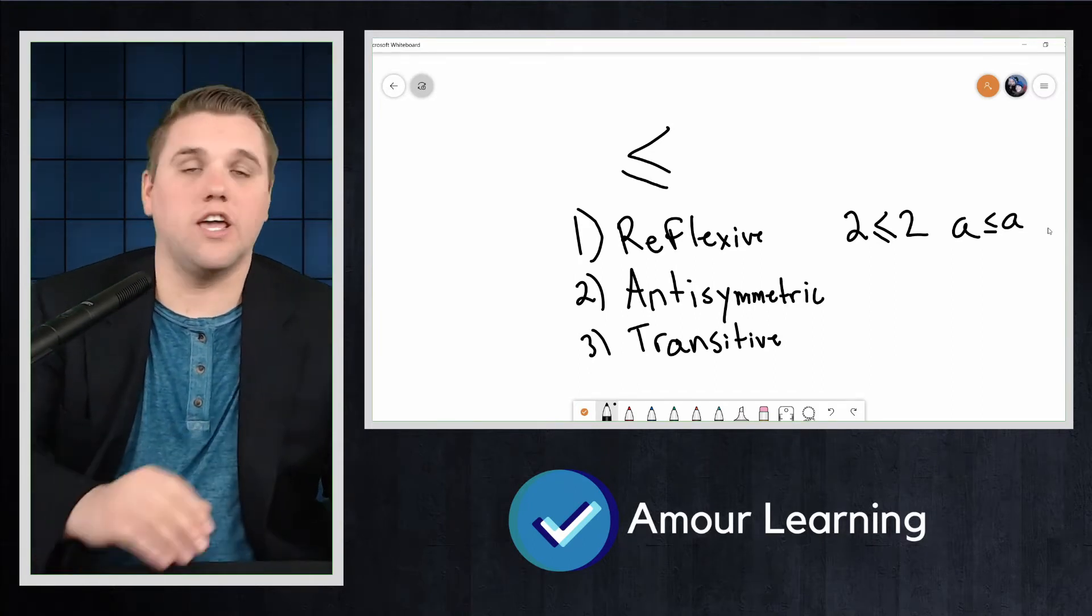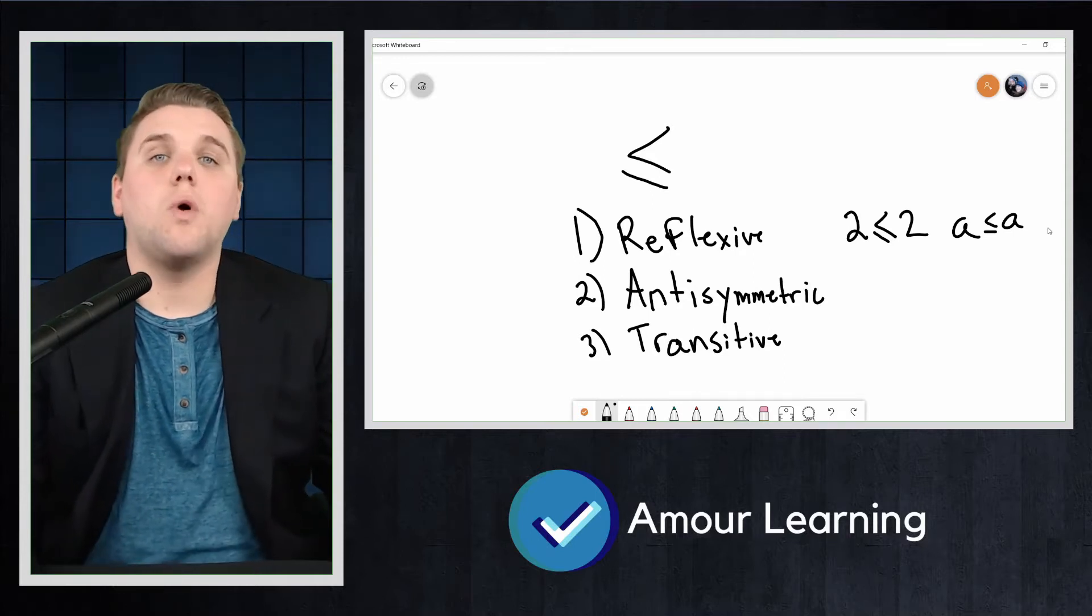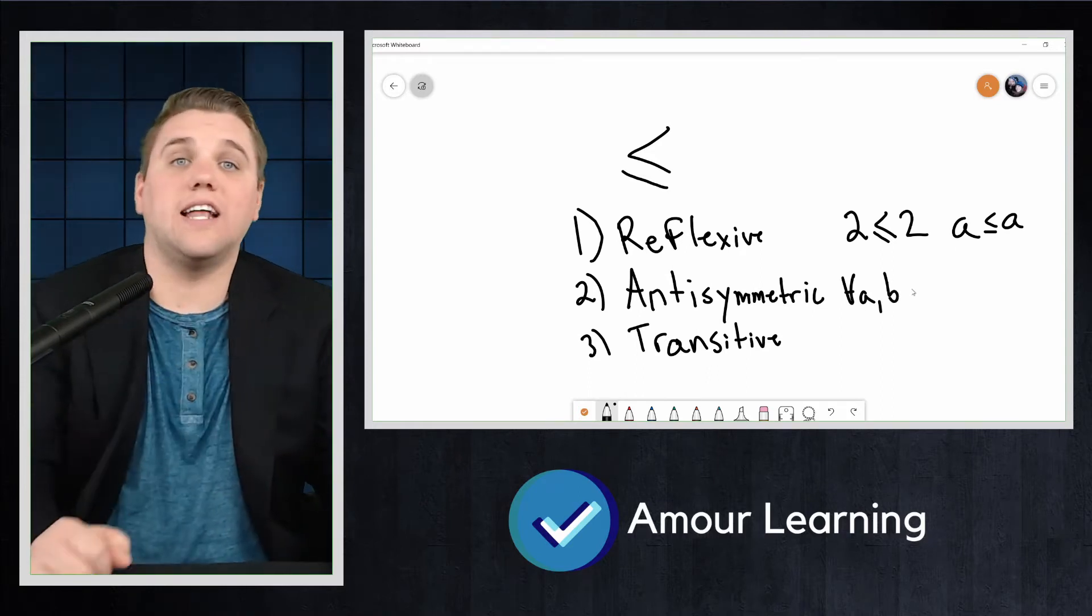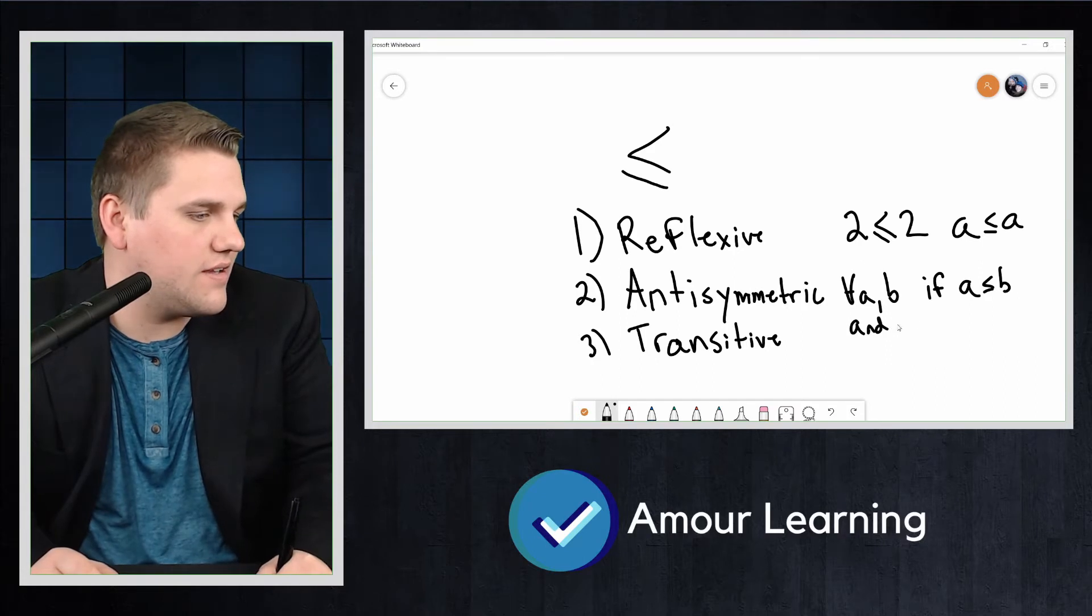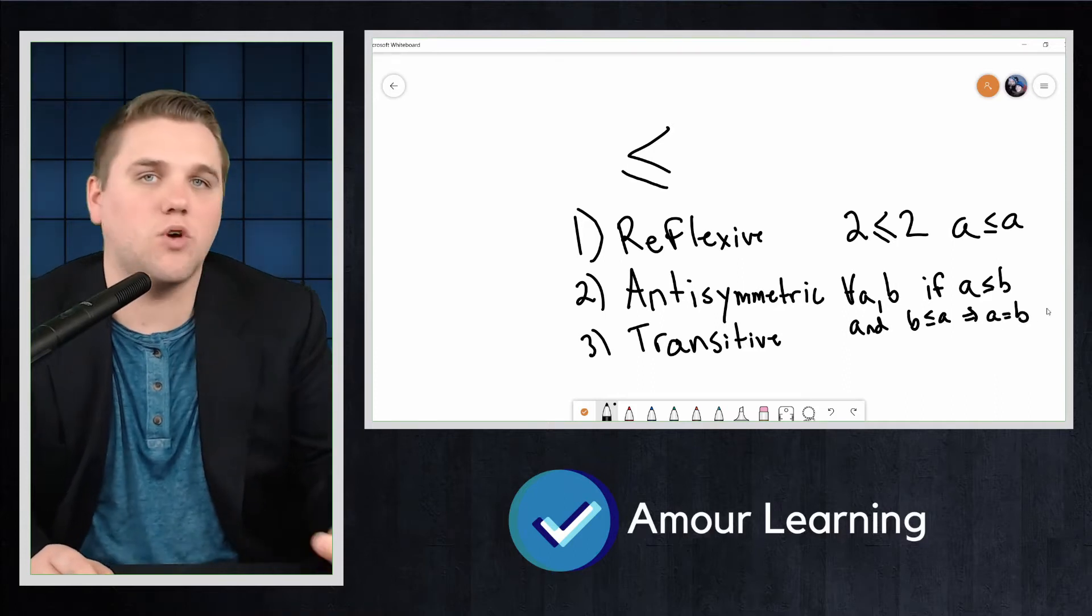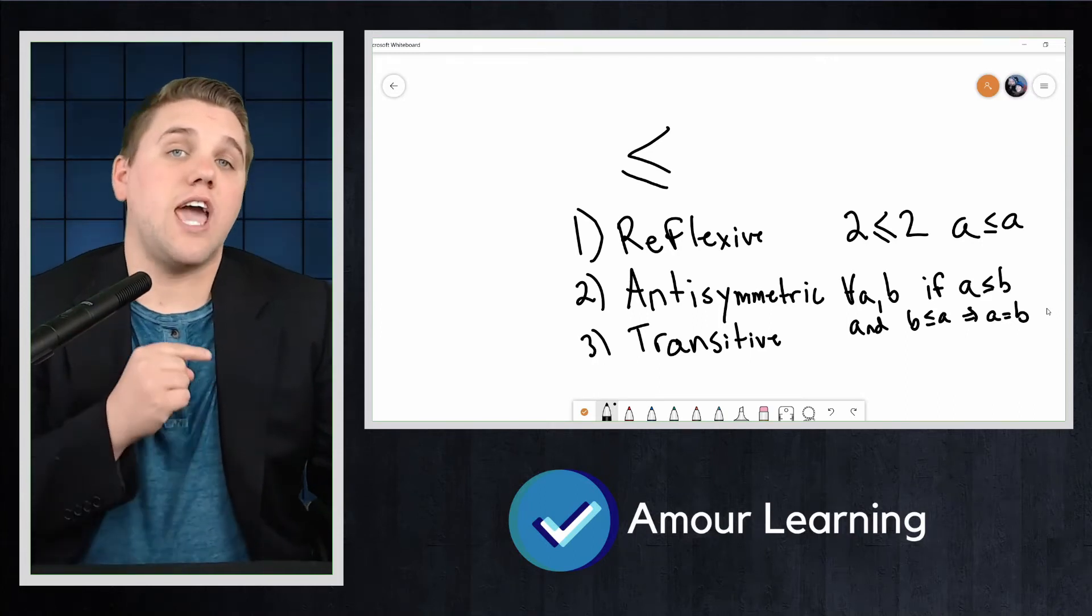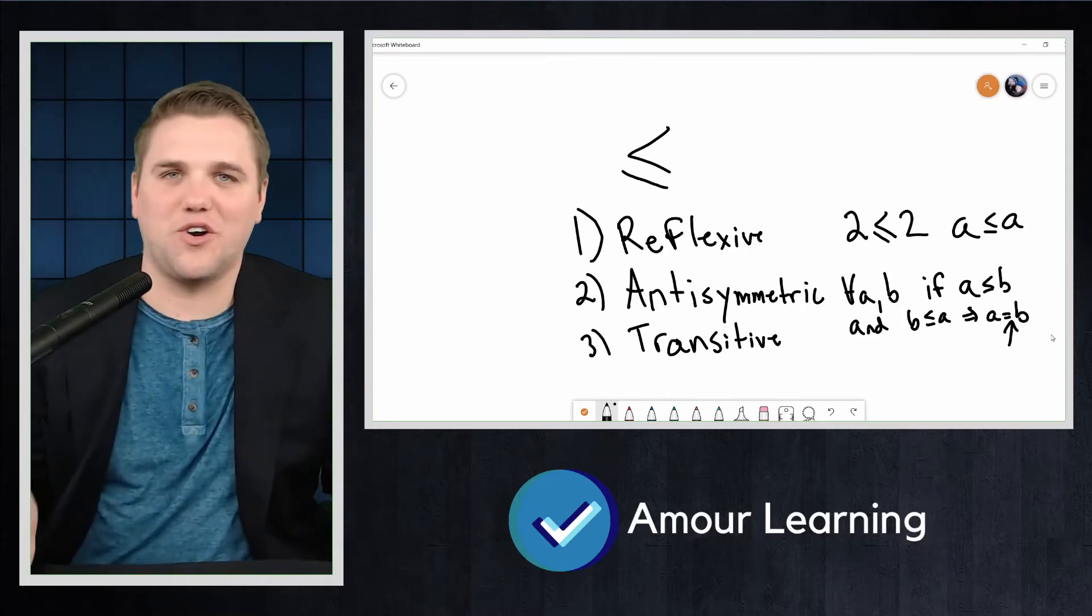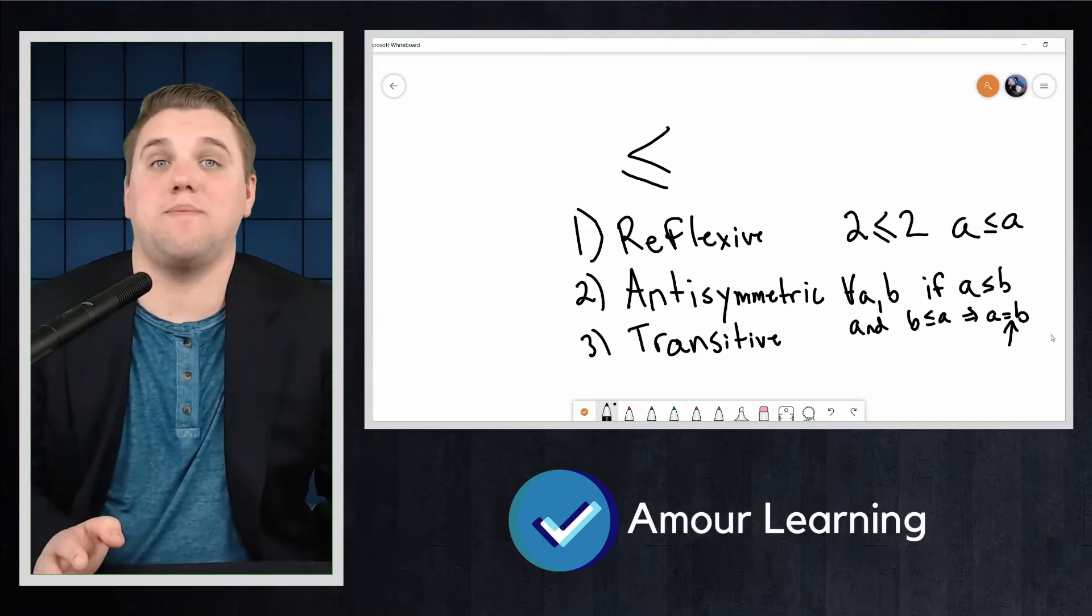What about the anti-symmetric property? What does that mean? Well, what this means is that for all elements in our universe, for all A and B, if A is less than or equal to B and B is less than or equal to A, then that just means A and B are equal to each other. Now this could be tricky sometimes because in the definition of partial orderings, there is a use of the equal symbol, which is an equivalence relation. It's a different relation. When we say A equals B in this context, though, we just mean that A and B are literally the same element in the universe.